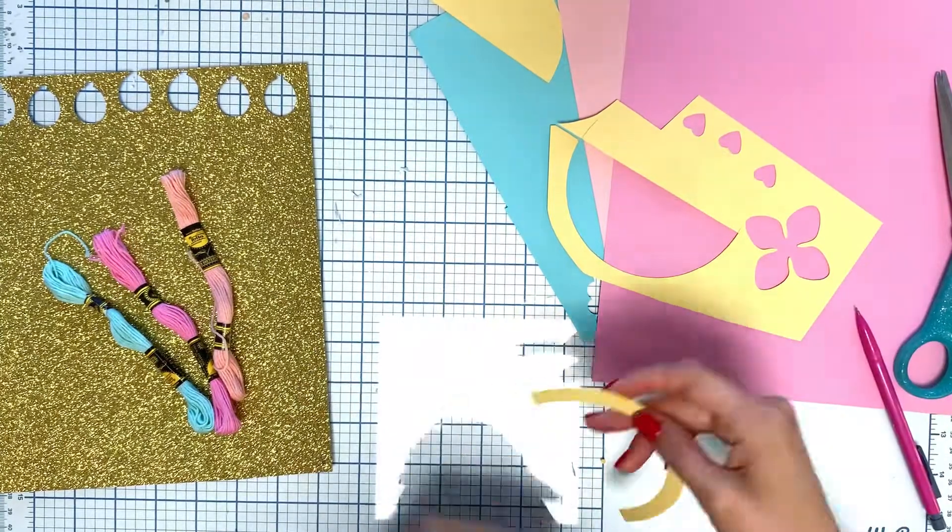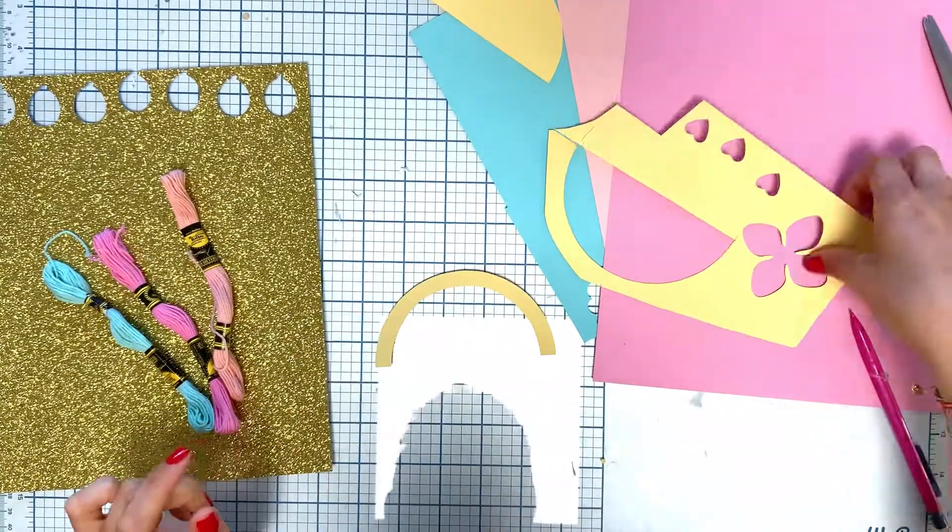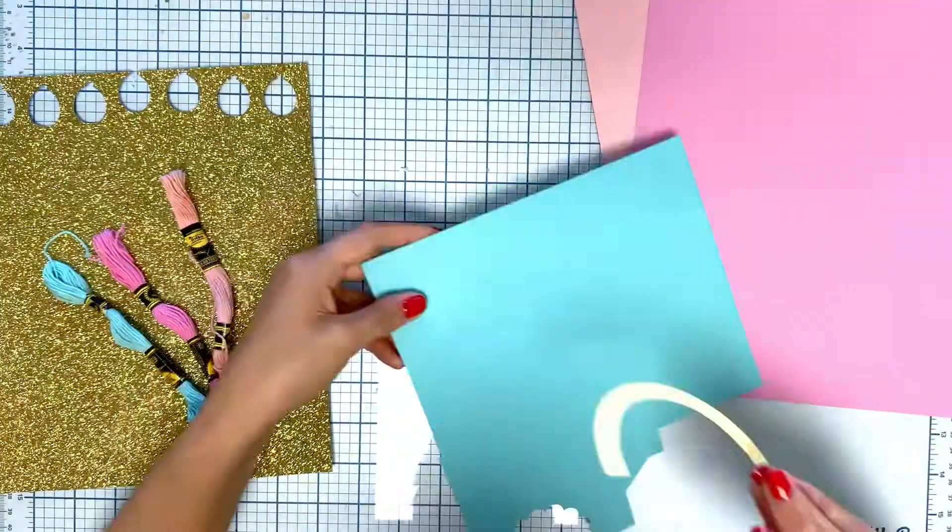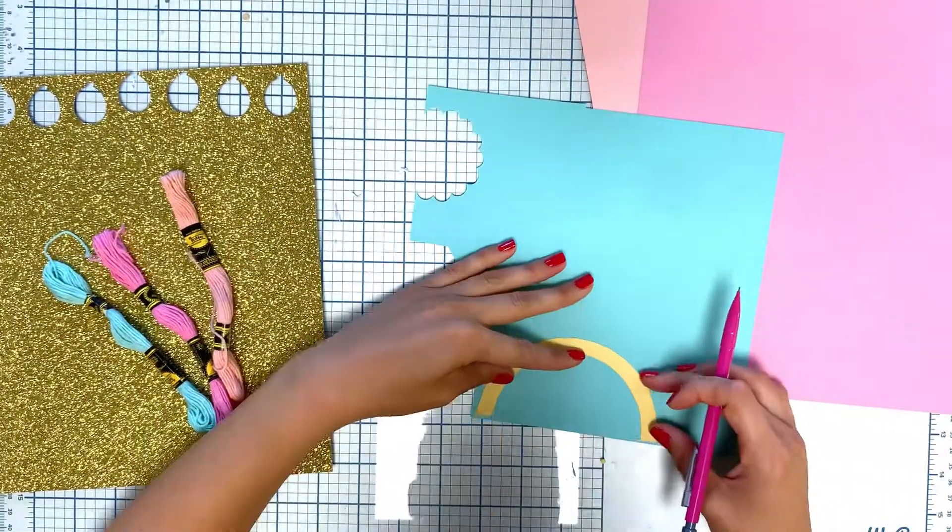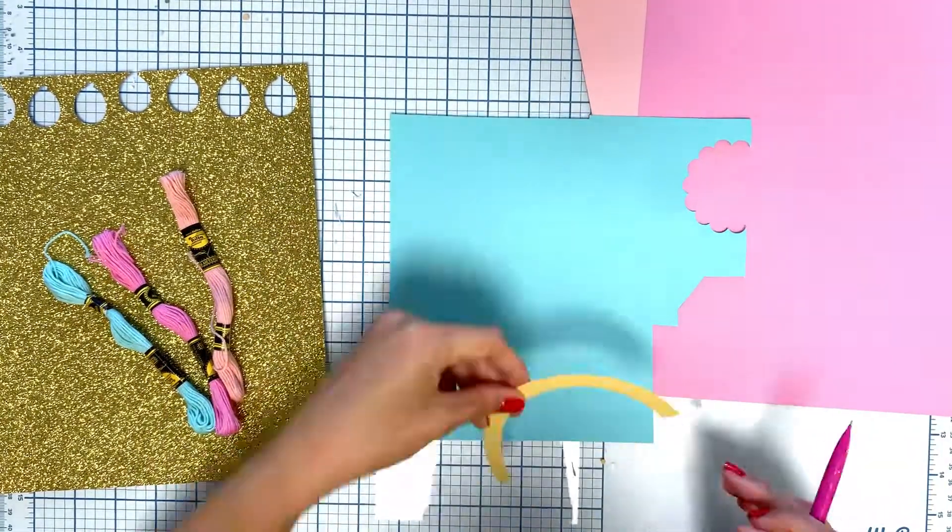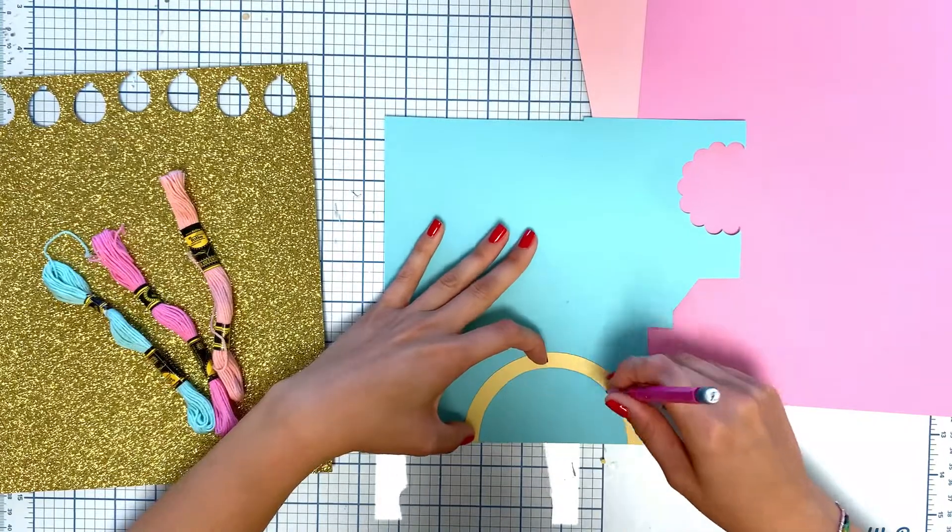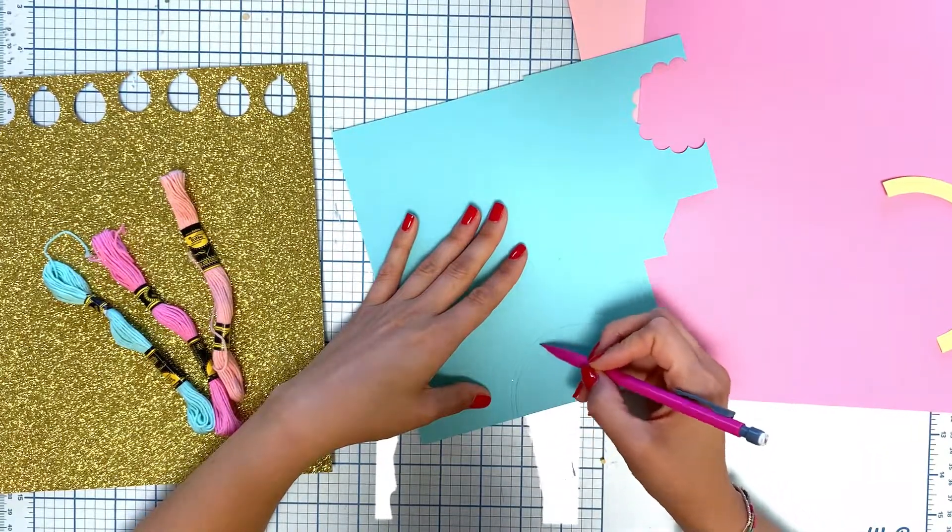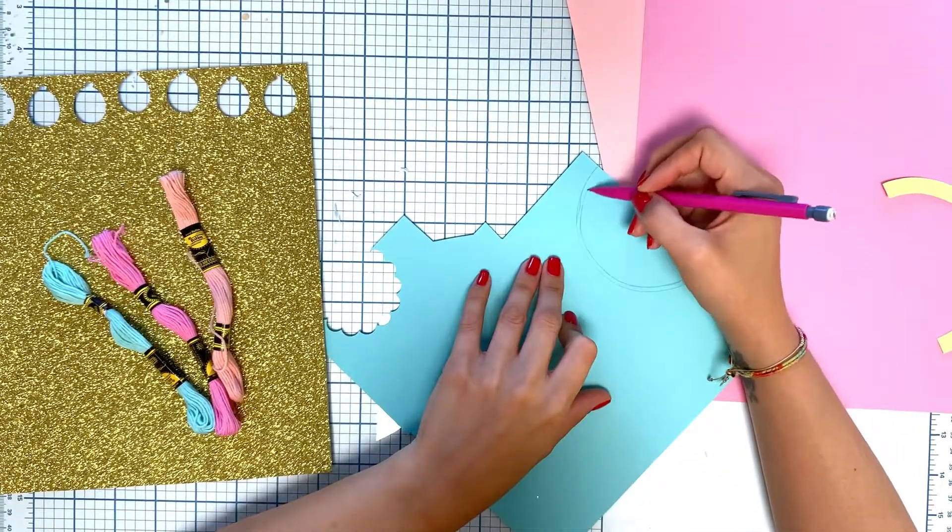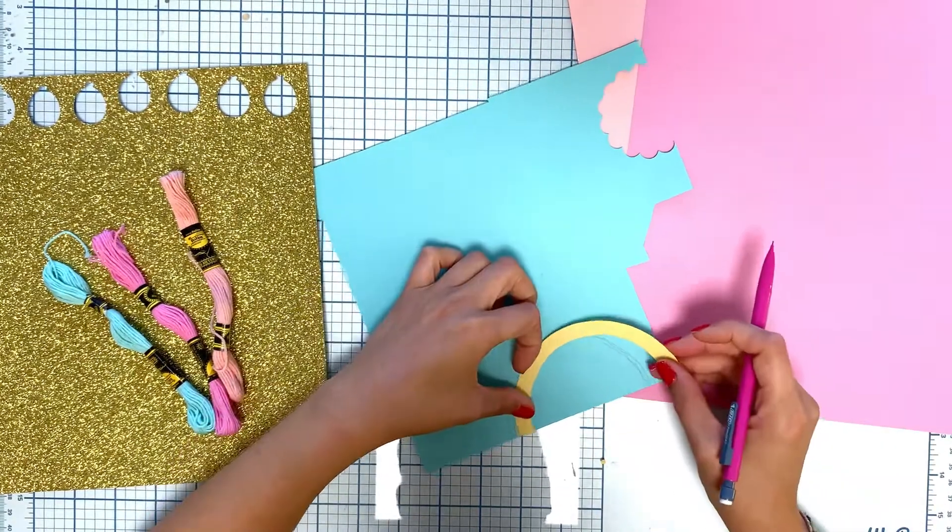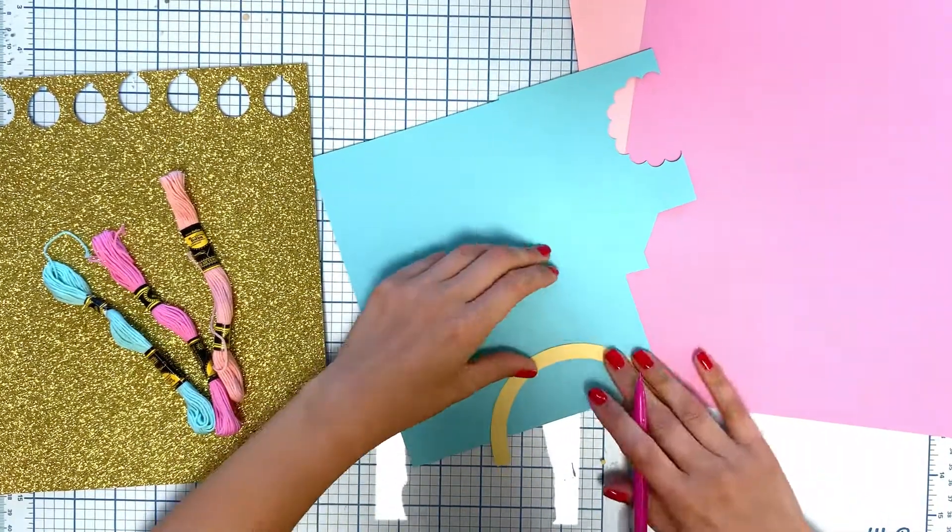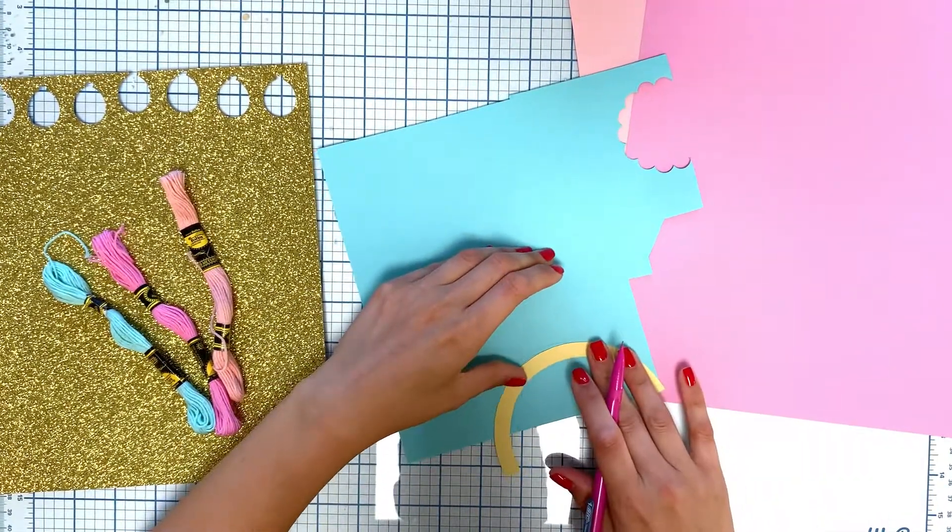To start, I took five different papers from American Crafts and Basel, which is also American Crafts. I took papers that I really liked that are very summery and very Lisa-like.